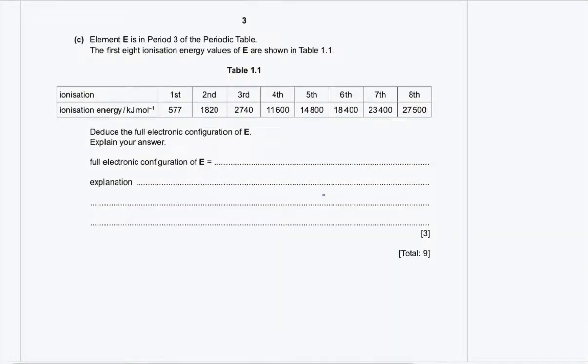Part C: element E is in period 3 of the periodic table. The first eight ionization energy values of E are shown in table 1.1. These are the first eight ionization energies of element E, which is in period 3. You need to use the full electronic configuration of E and explain your answer.